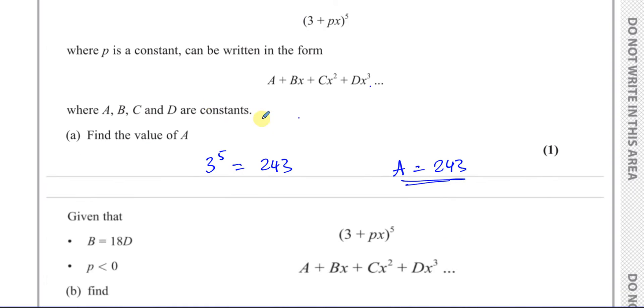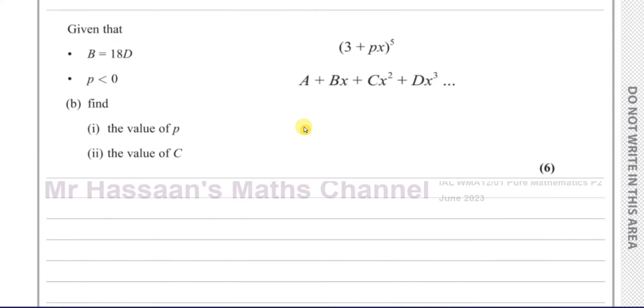Then it says, given that B equals 18D, and that p is less than 0, find the value of p and the value of C. Now, so we know that B and D are connected to each other. So if we concentrate on this term and this term, that might help us here.